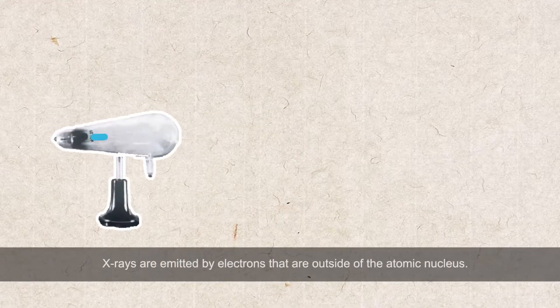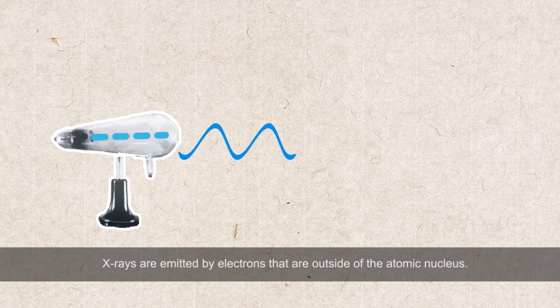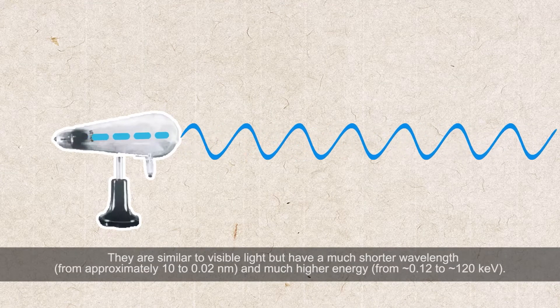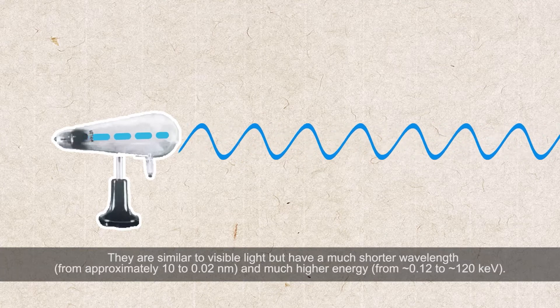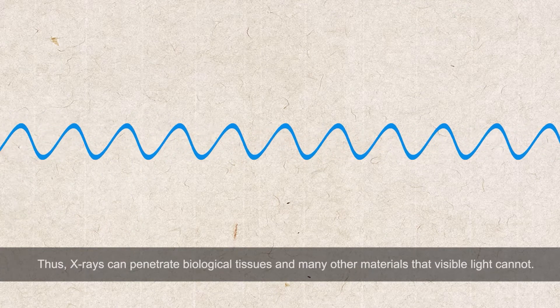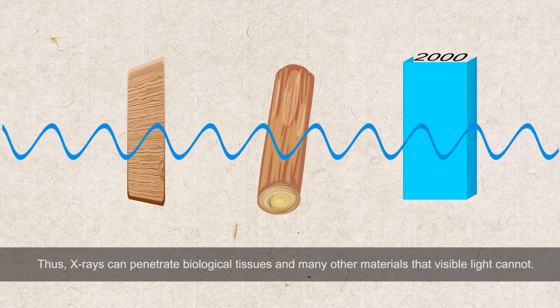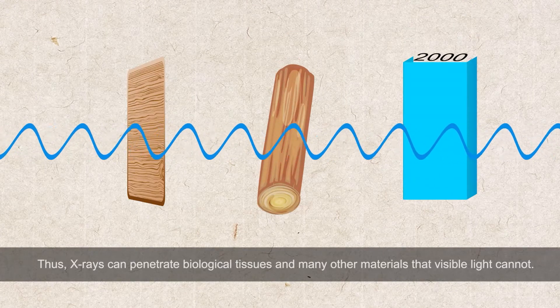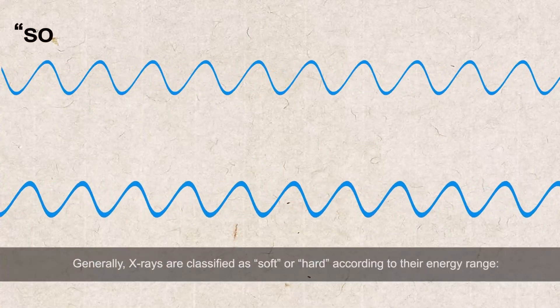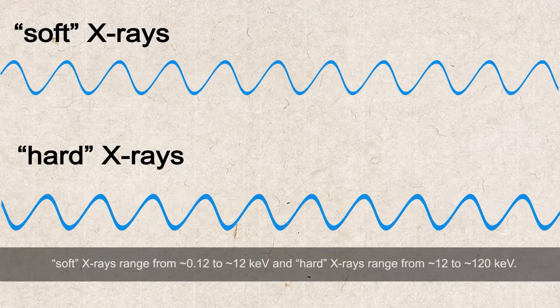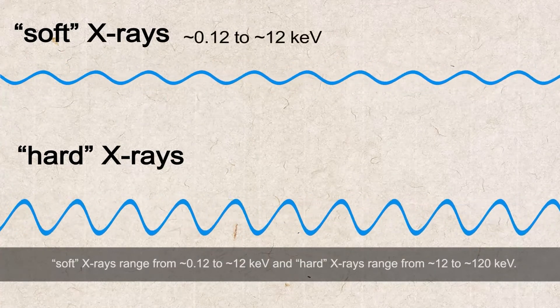X-rays are emitted by electrons that are outside of the atomic nucleus. They are similar to visible light but have a much shorter wavelength and much higher energy. Thus, X-rays can penetrate biological tissues and many other materials that visible light cannot.